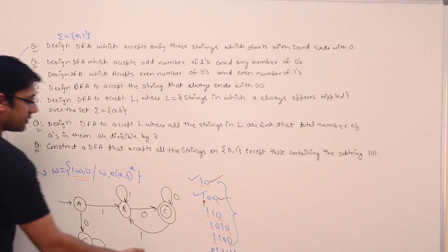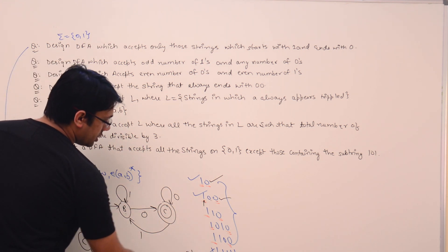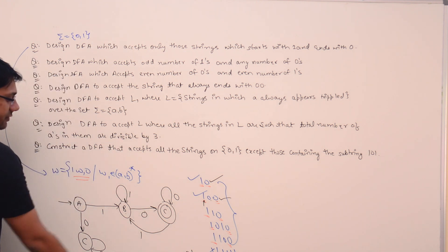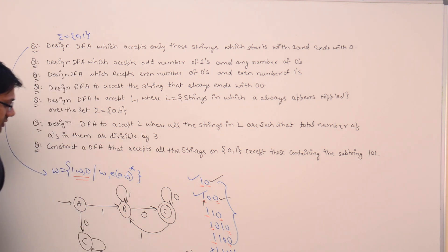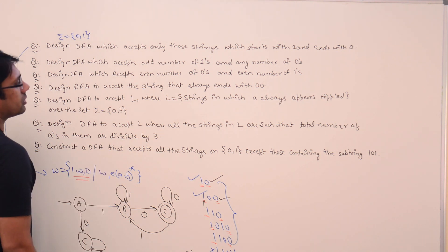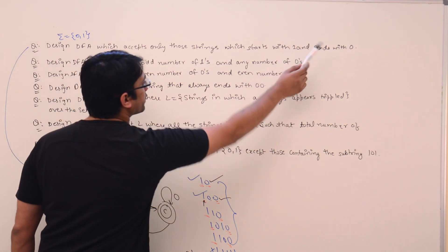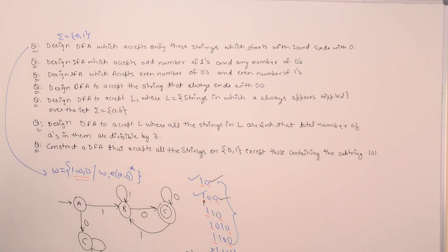If a string starts with 0 — for example, 0 1 0 1 0 — then from state A on reading 0, we go to a dead state and the string is completely rejected. So this is the DFA which accepts all strings over {0, 1} that start with 1 and end with 0.